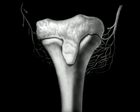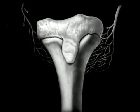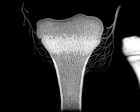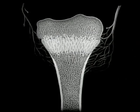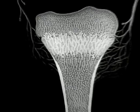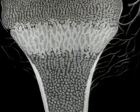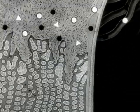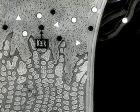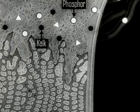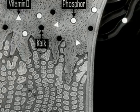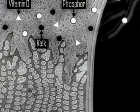Wesentlich für die Entwicklung des Kindes ist der Knochenaufbau. In die Wachstumszone des Knochens gelangen durch die Blutbahn die Mineralstoffe Kalk und Phosphor sowie das Vitamin-D, hier durch kleine Dreiecke dargestellt.